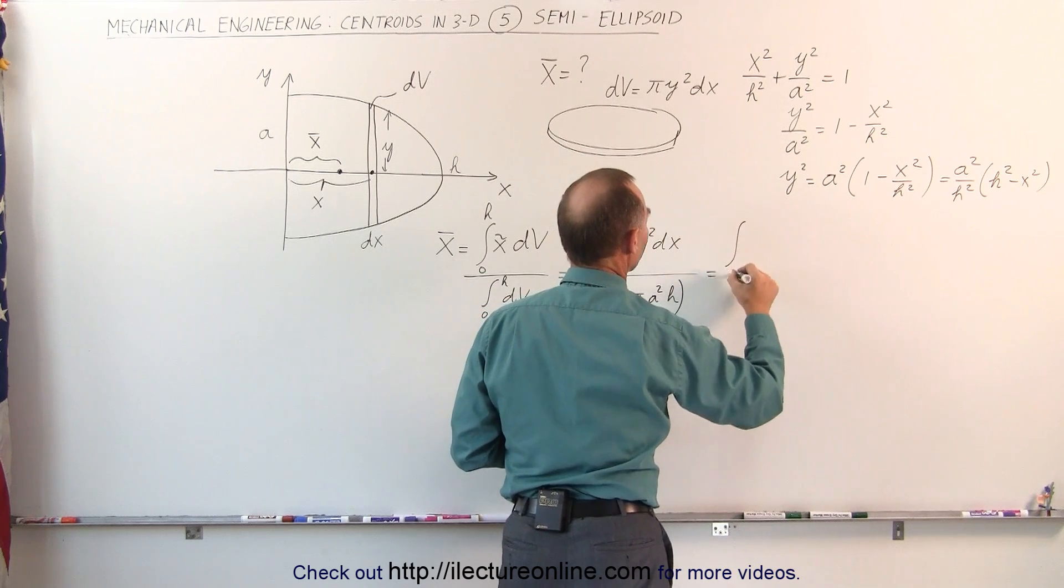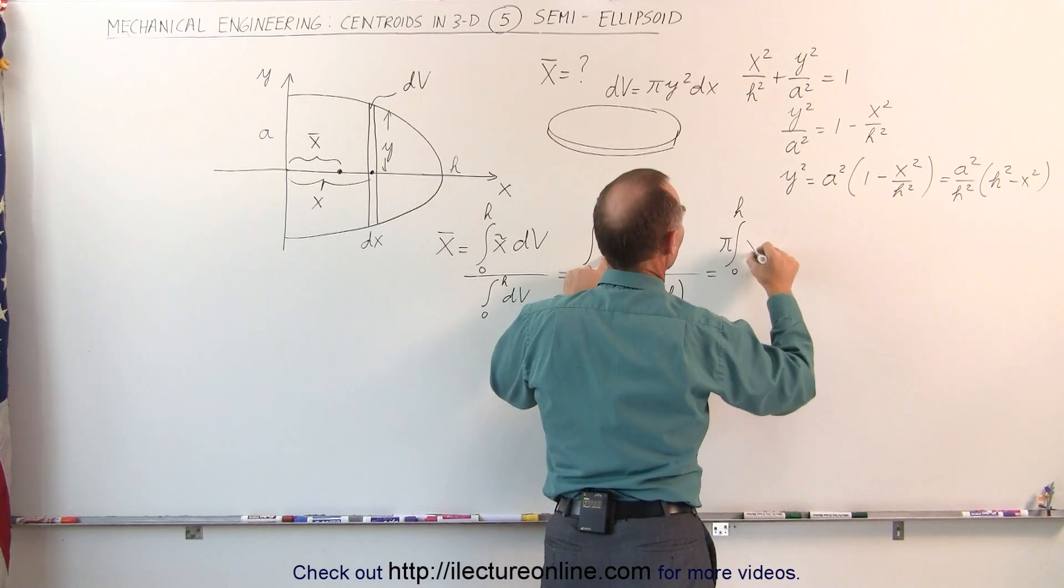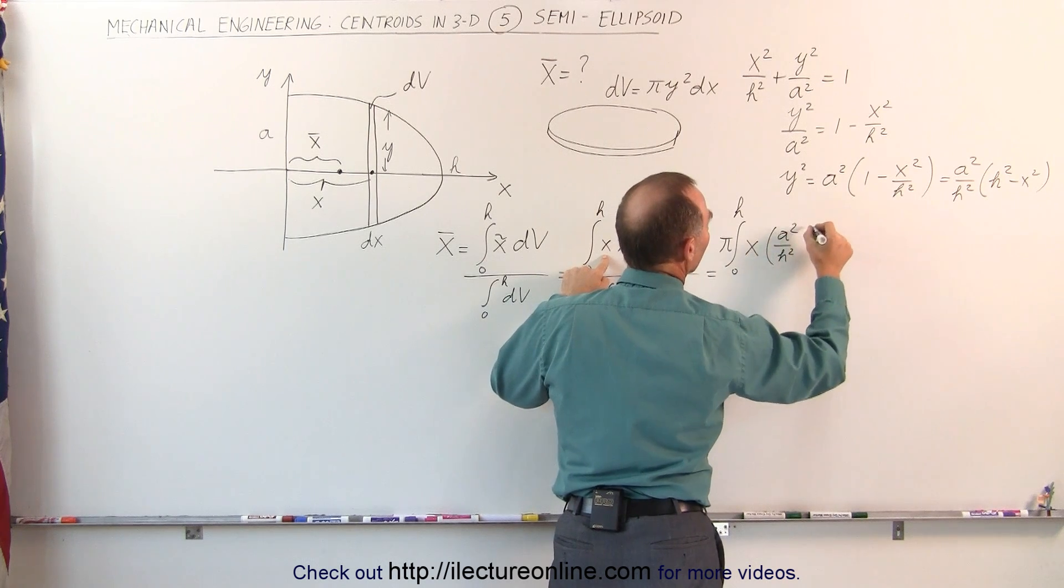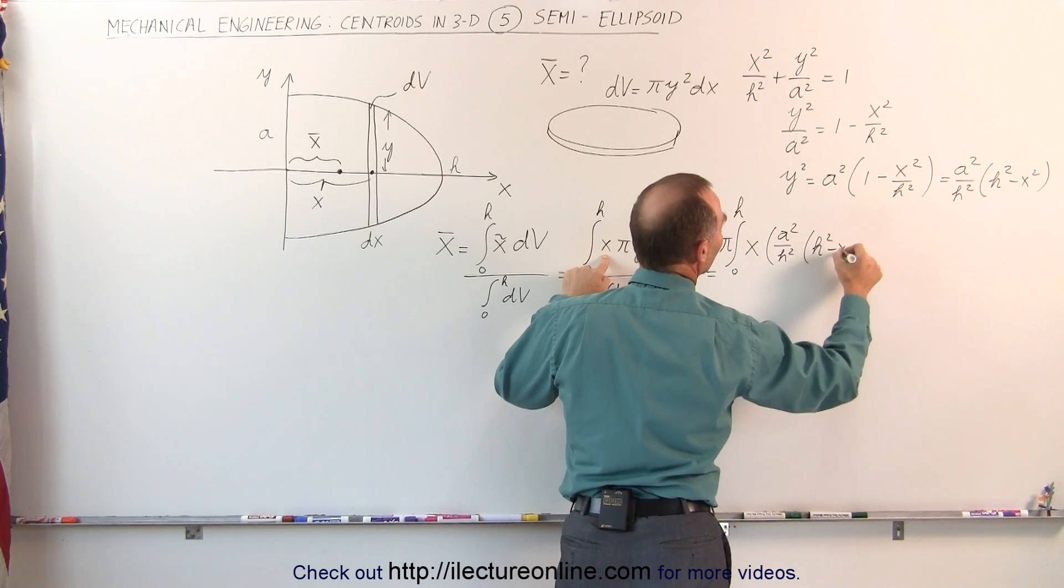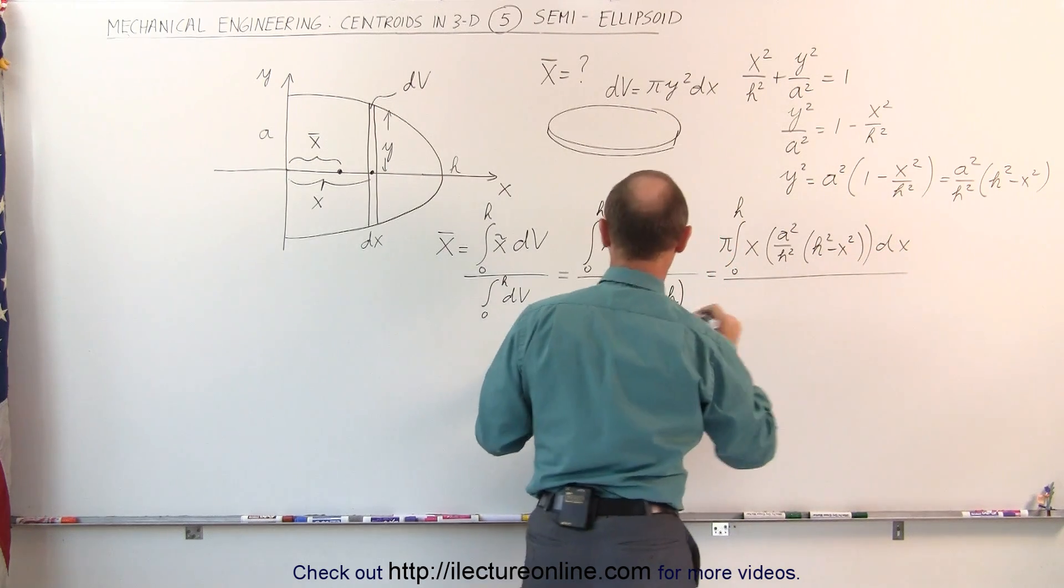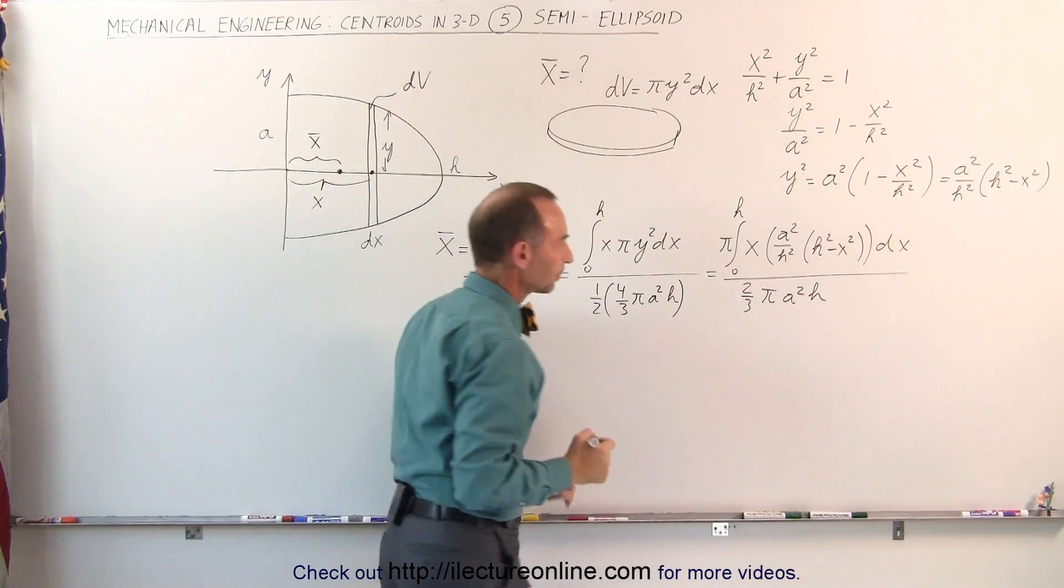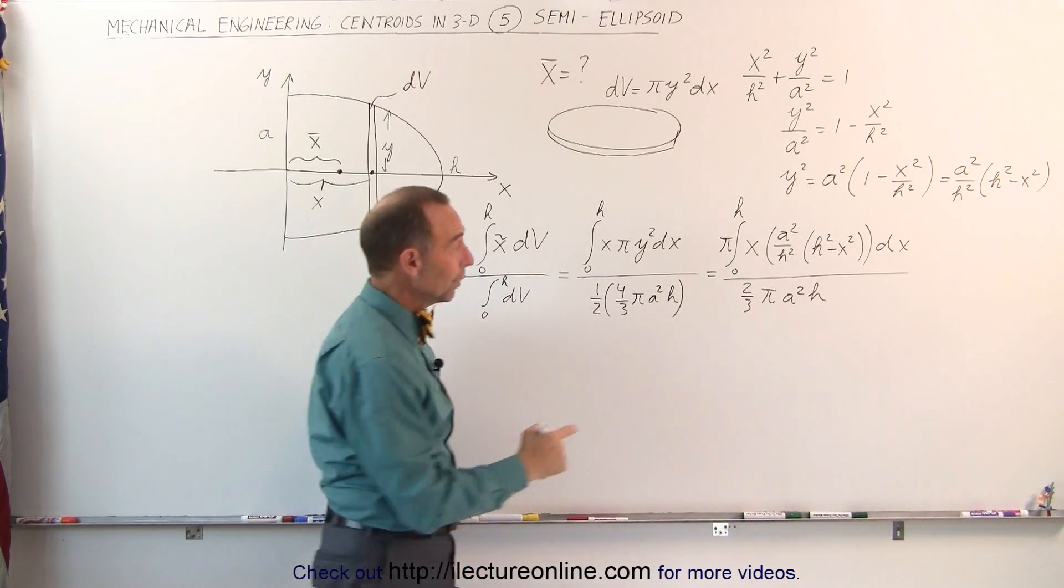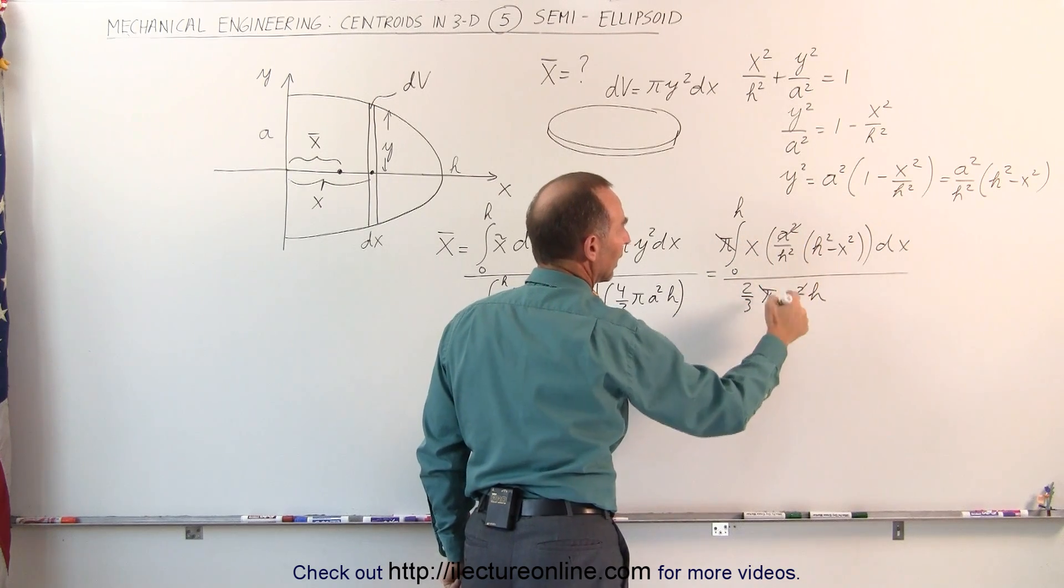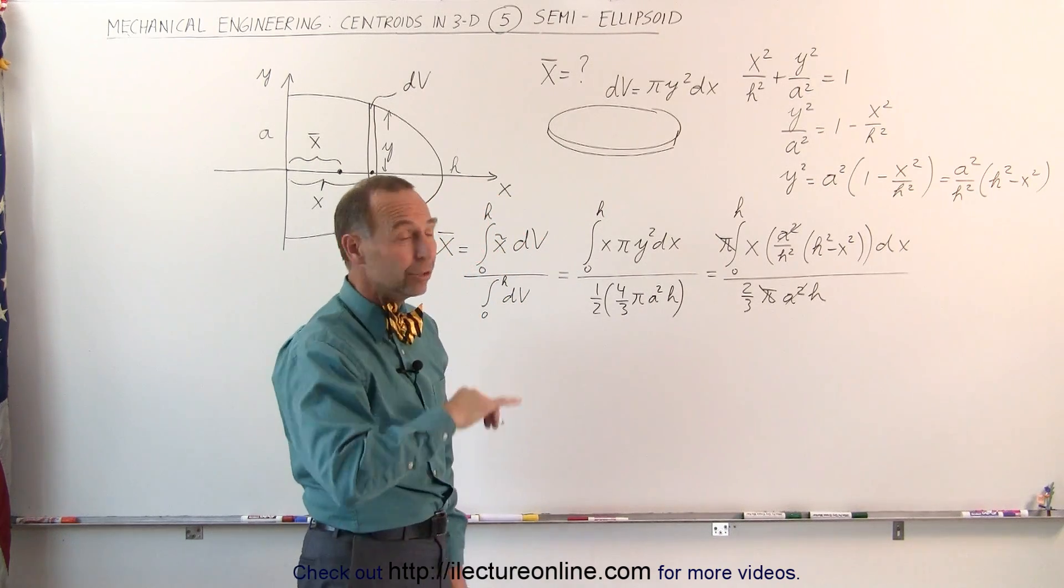So we plug that in for y² right here. We get this is equal to integral from 0 to h of π, which can be taken outside the integral sign. We have an x times the y², which is (a²/h²)(h² - x²), and then times dx divided by 1/2 of that, which would be 2/3 πa²h. Now notice, we have a π and a π here. That cancels out. We have an h² and an a². That cancels out, and we bring the h² to the denominator and make that h³ in the denominator.